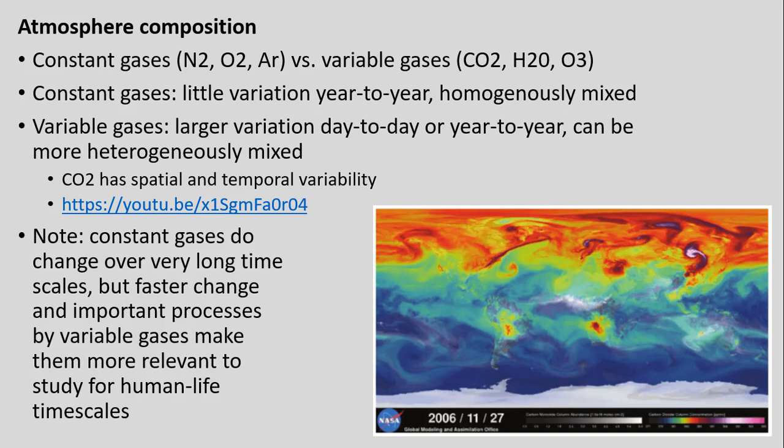With variable gases, we see larger variation in day-to-day or year-to-year composition, and they can be more heterogeneously mixed within the atmosphere. For example, carbon dioxide has a little more spatial and temporal variability on a day-to-day or month-to-month up to year-to-year basis. There's a video linked here running through a year cycle of carbon dioxide showing where we see greater or lesser extents of it.